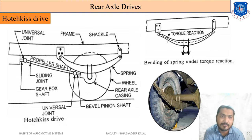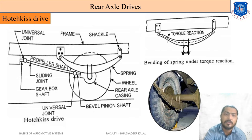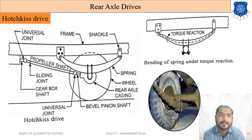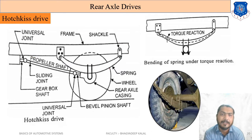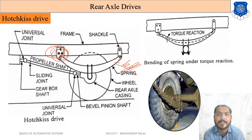In the Hotchkiss type drive, let us understand its construction and function. The axle bears four types of load: weight of the vehicle, driving thrust, torque, and side load. The frame of the vehicle has leaf springs connected to it. One end of the leaf spring is rigidly jointed to the frame, and the other end — the rear side — is connected with a shackle to allow pendulum-type movement.